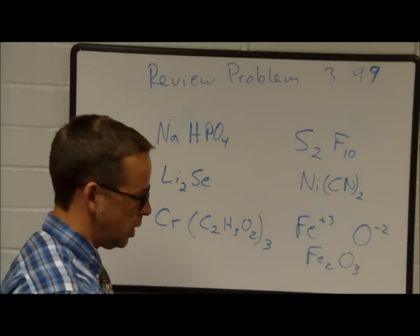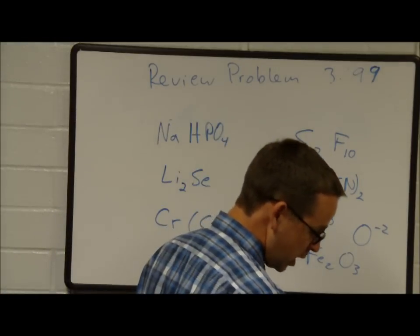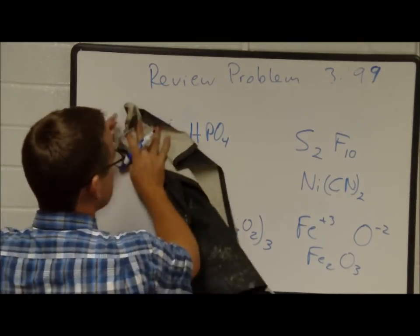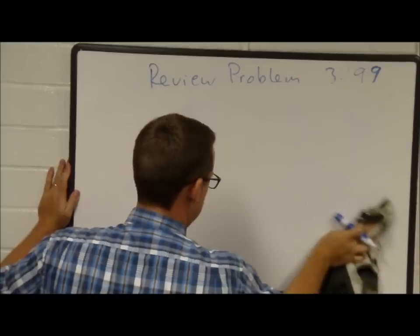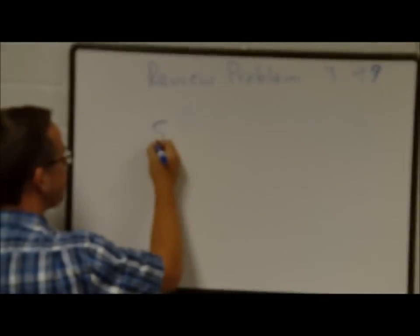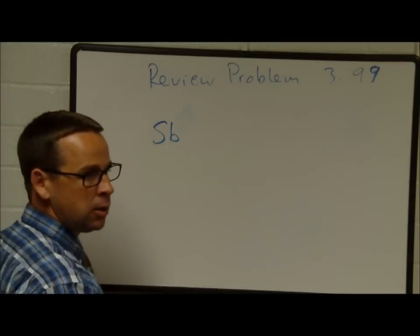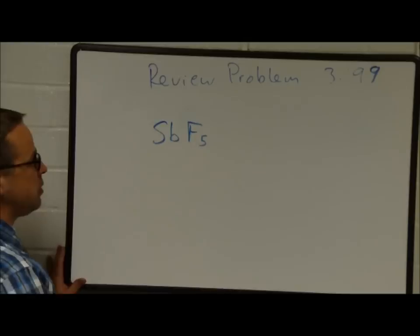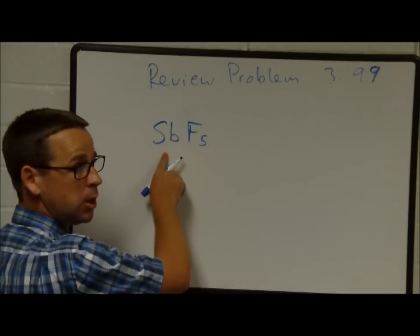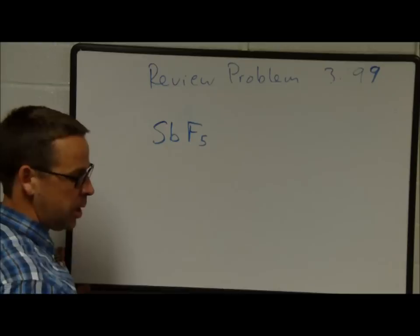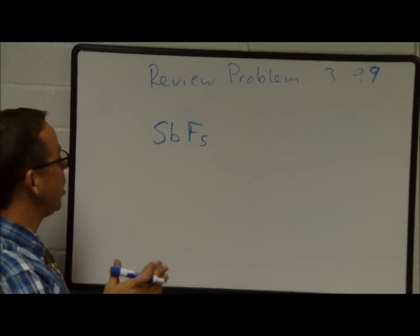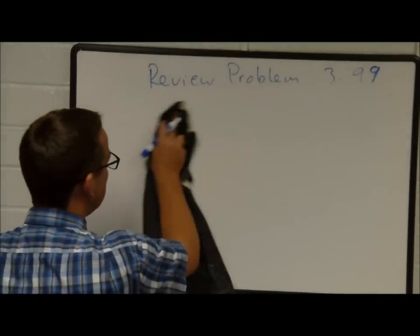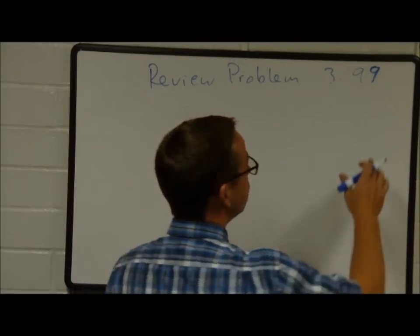Antimony pentafluoride: antimony has symbol Sb, and pentafluoride means five fluorides. Antimony and fluorine are both nonmetals (semi-metal and nonmetal), so this is a molecular compound: SbF₅.